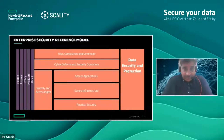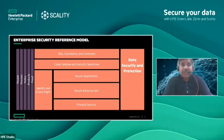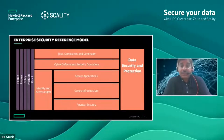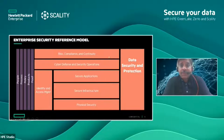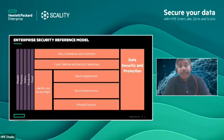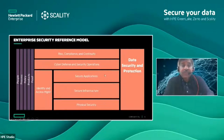There are seven domains addressed as part of the holistic end-to-end security reference model: risk compliance and continuity, cyber defense and security operations, secure application, secure infrastructure, physical security, identity and access management — which is key for every single layer — and then the biggest vertical tower cutting across all those domains is data security and protection. Data exists in every domain, so data security and protection is the key center of the entire seven-domain reference model.